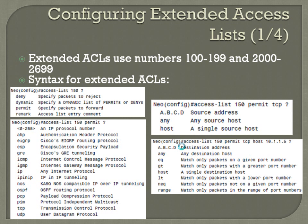The syntax for extended ACLs uses access-list followed by the ACL number in the extended range, which gives you more options. Using a question mark, you get pretty much the same items as standard ACLs — deny, permit, remark — plus a dynamic option. The dynamic option is not really covered in the CCNA; it's used for more advanced filtering.